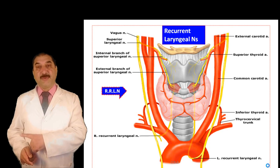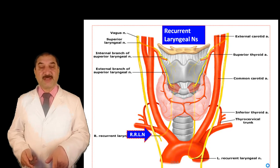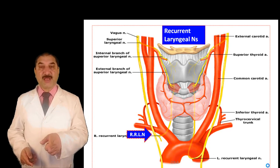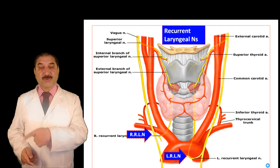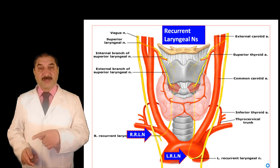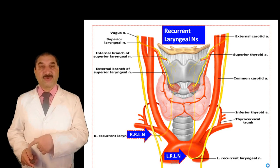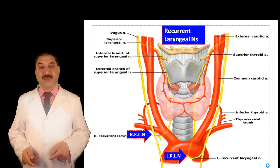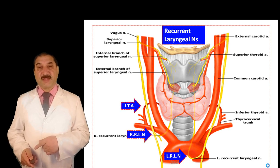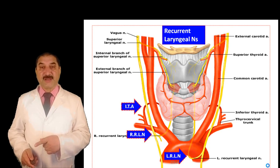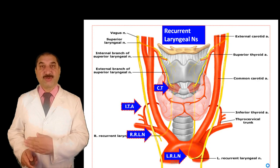The recurrent laryngeal nerve on the right side arises from the vagus, hooks around the first part of the subclavian artery, and enters the tracheoesophageal groove to supply the intrinsic muscles of the larynx except the cricothyroid. On the left side it enters the thoracic cavity at the level of the ductus arteriosus, hooks around it, enters the tracheoesophageal groove, and supplies the muscles of the larynx. The inferior thyroid artery is related to the recurrent laryngeal nerve, which also gives the inferior laryngeal nerve supplying the mucosa of the larynx below the vocal cords.